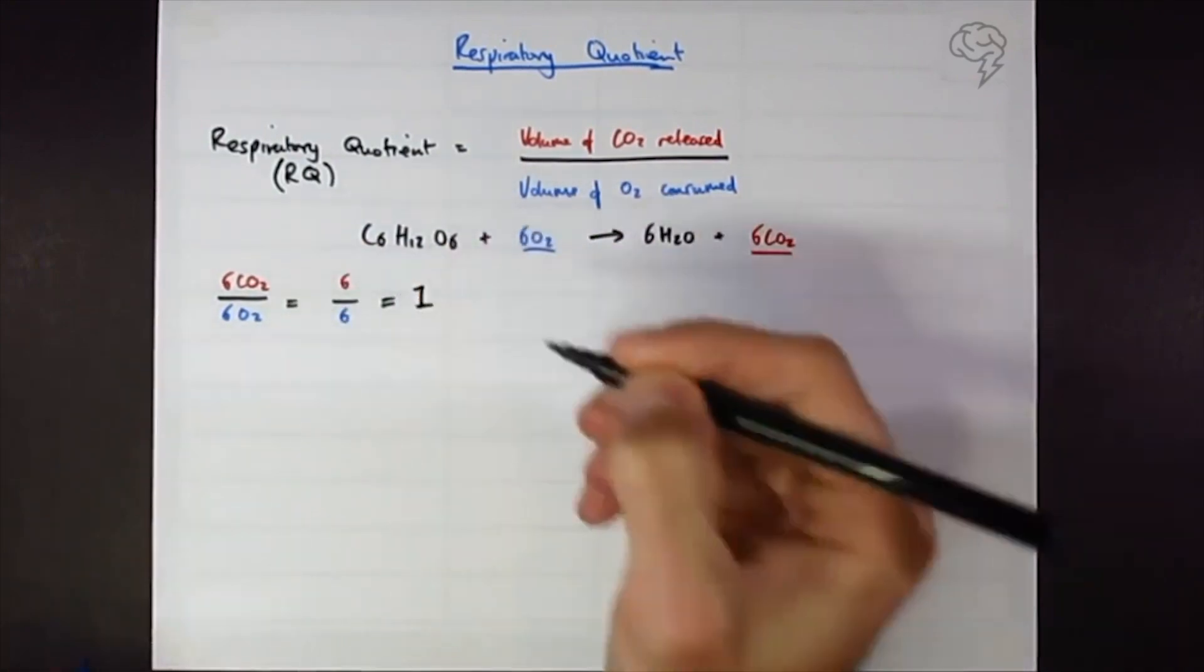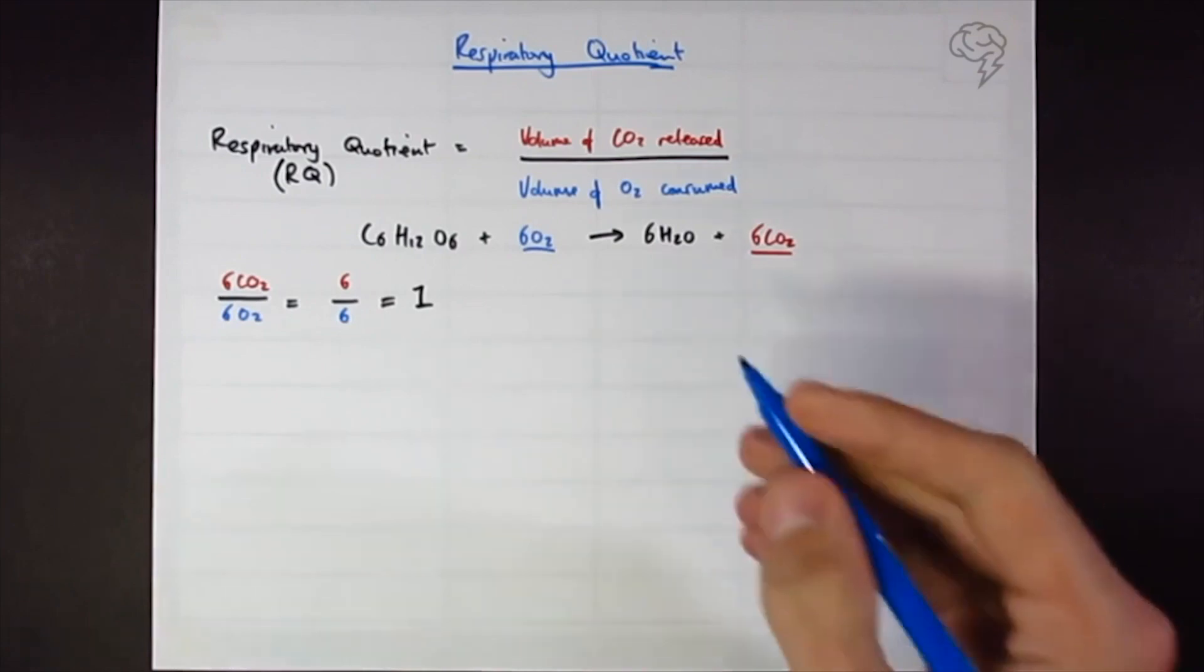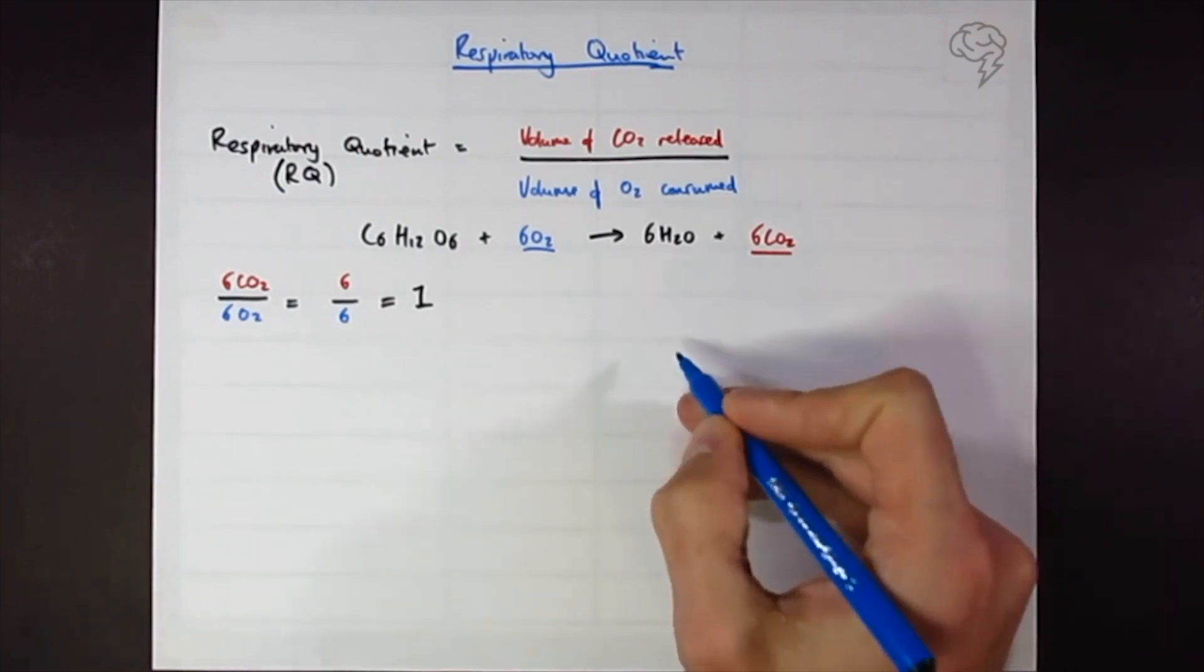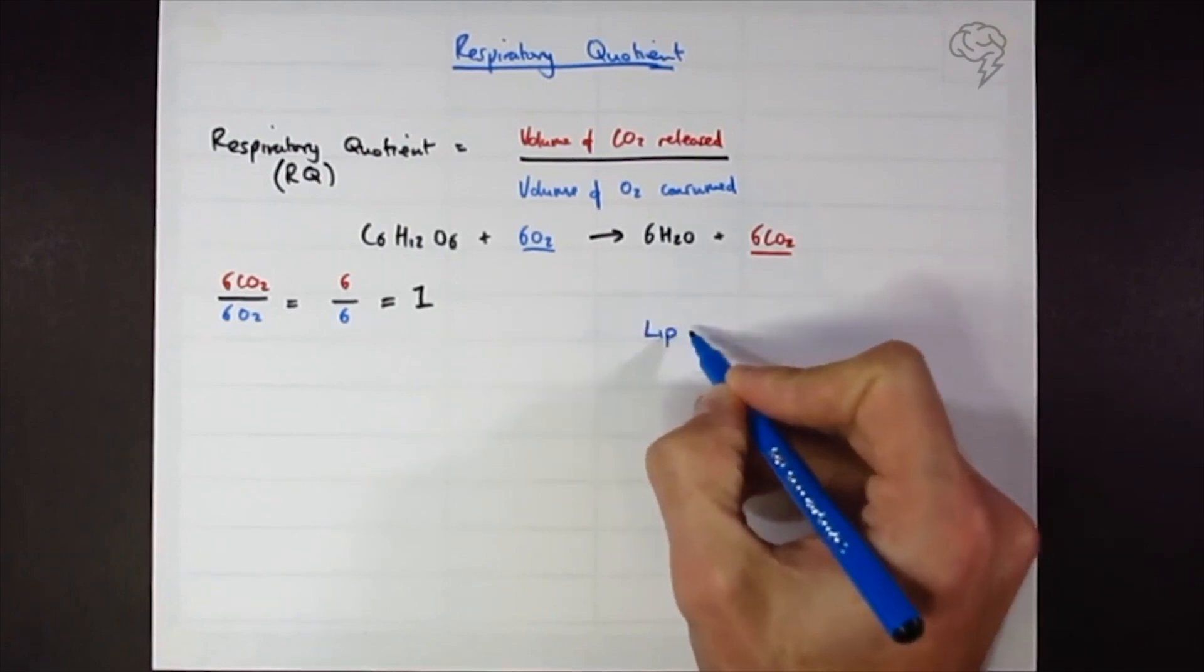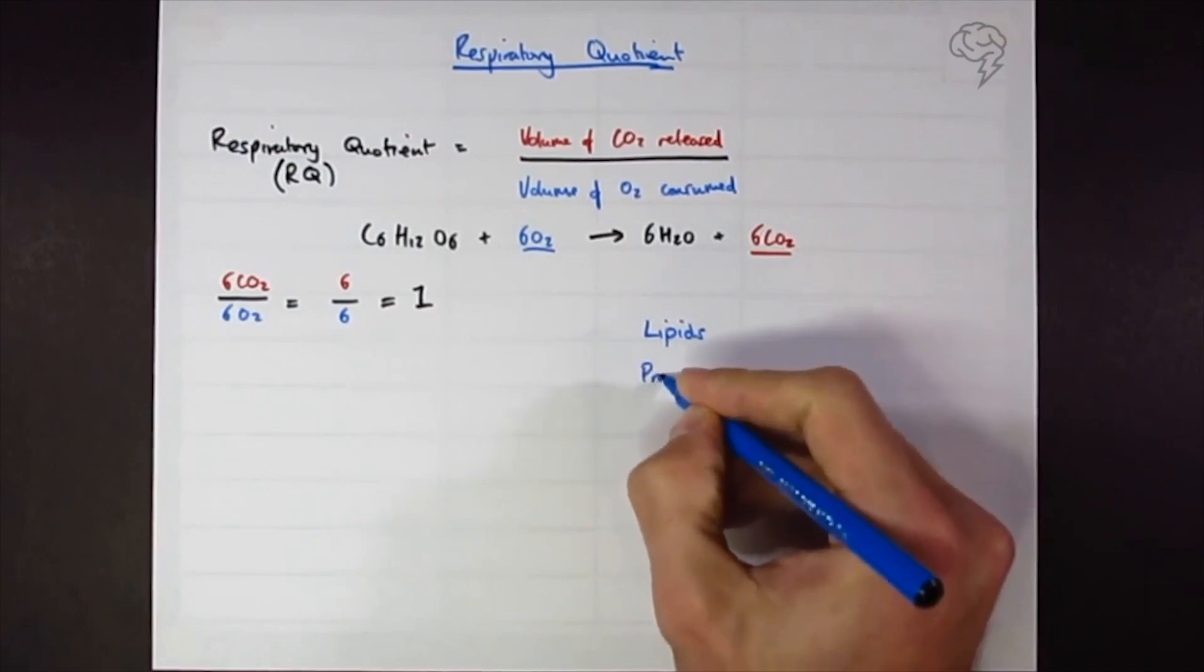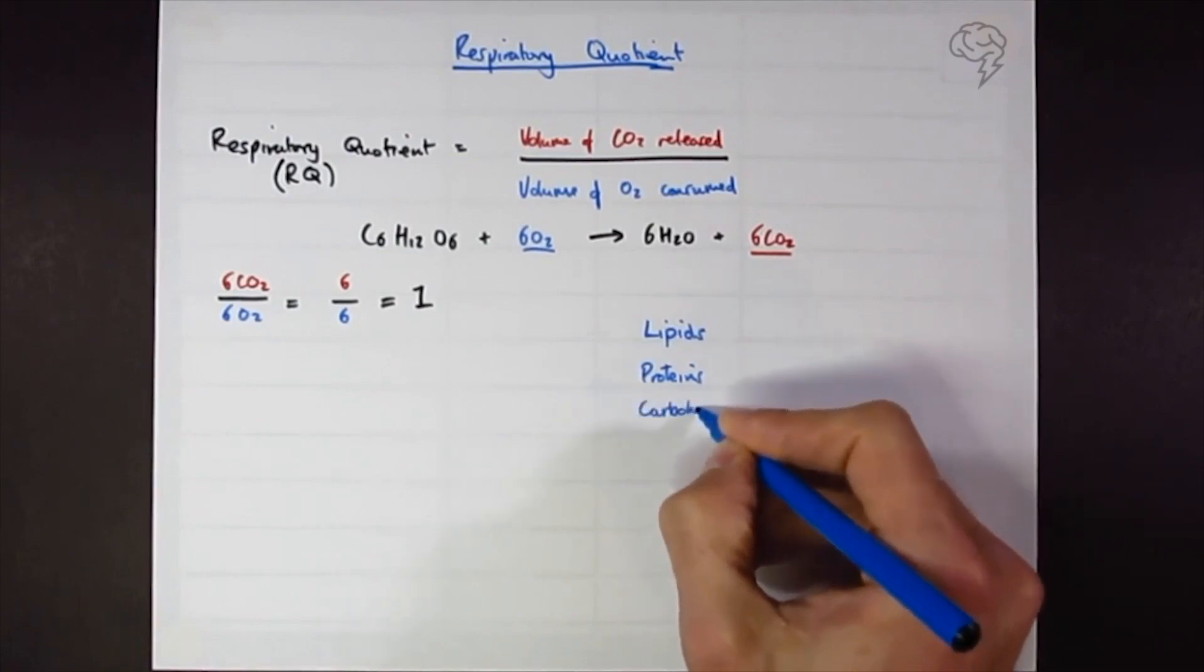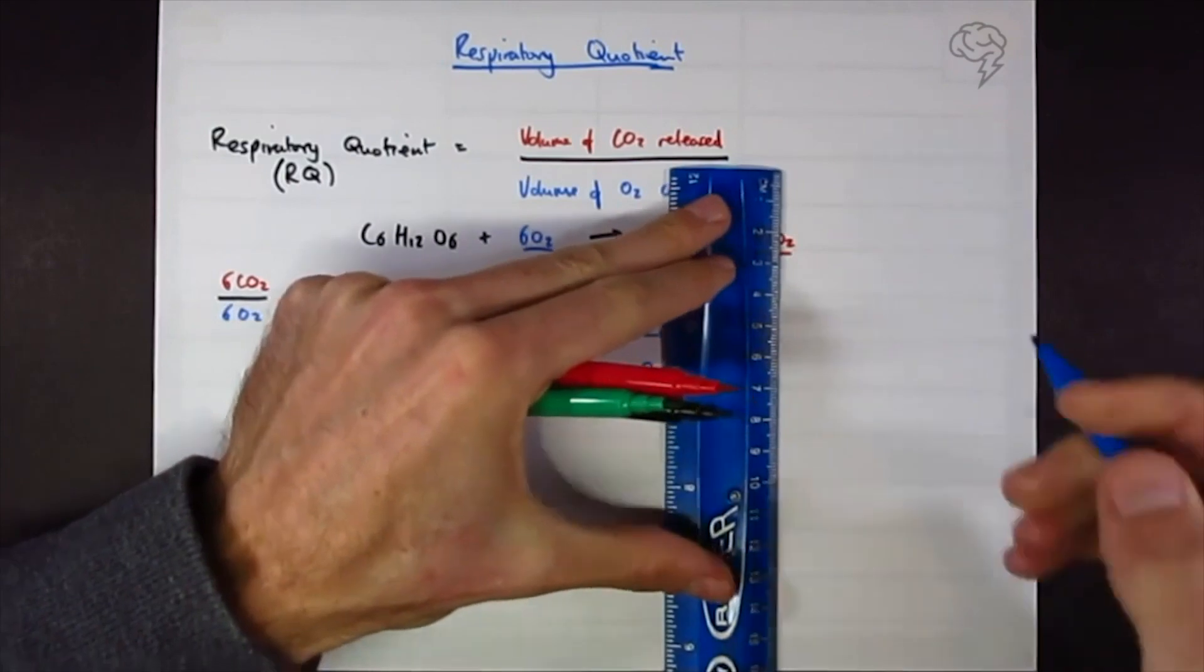Which equals one. So respiring glucose we have a respiratory quotient of one. We can look at different respiratory substrates to see how much oxygen is needed to respire them. Let's do this in a little table. We learned from Krebs cycle that we can actually also respire fats, lipids, we can respire proteins, and we can respire carbohydrates.